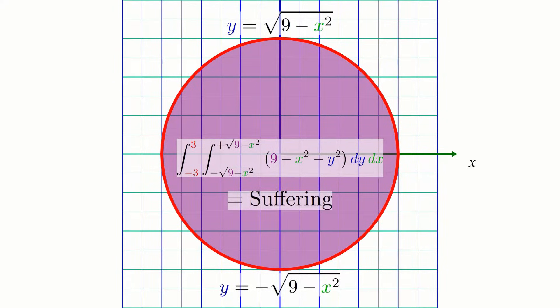However, there's actually a much nicer way to set up this integral if you happen to know polar coordinates. Using polar coordinates, we can describe our integration region, the disk of radius 3 centered at the origin, just using two simple inequalities.